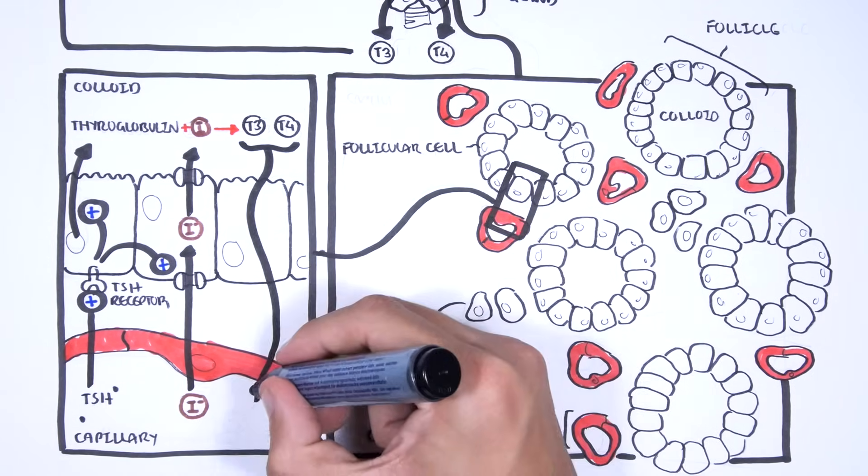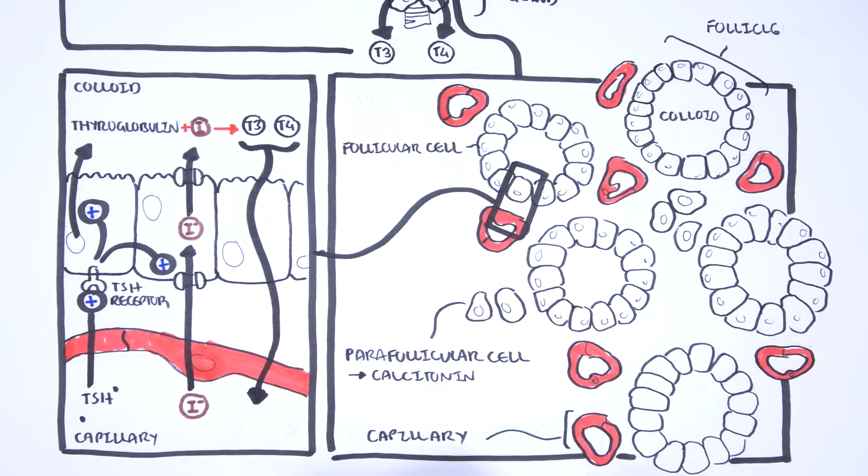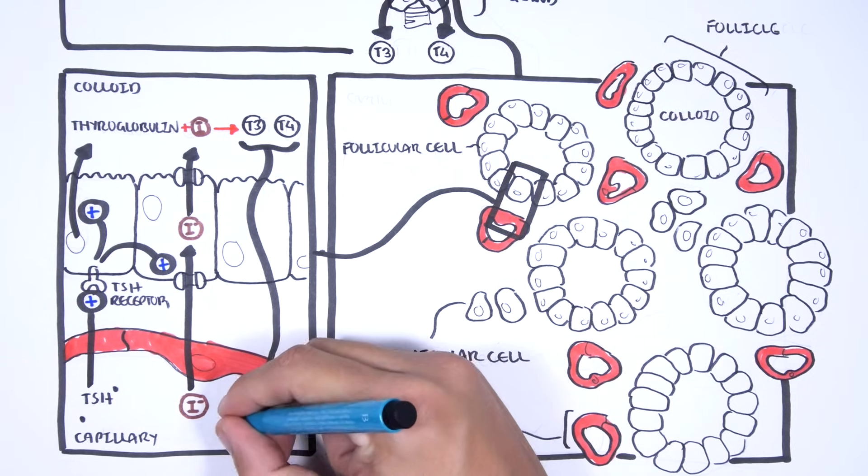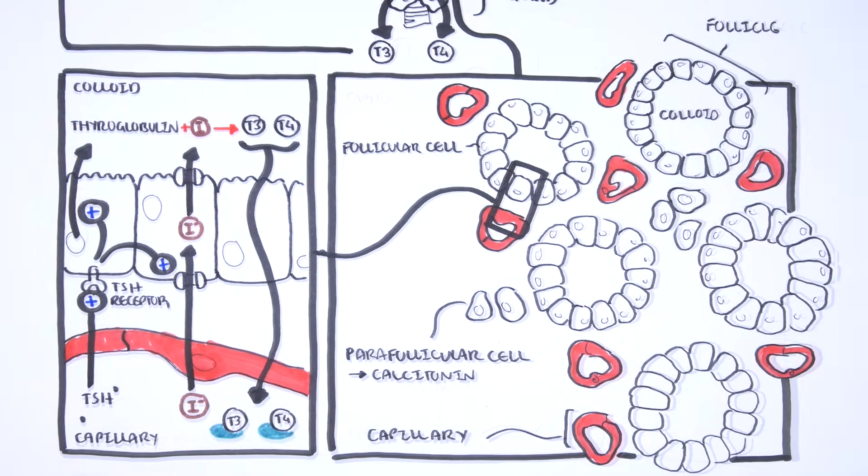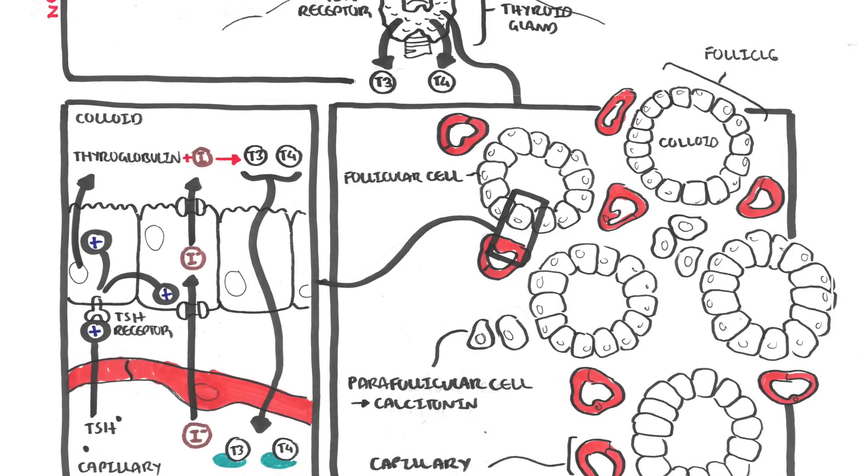T3 and T4 will enter circulation. The thyroid hormones travel in circulation bound to proteins, the main protein being thyroxine binding protein. And here, it will target the different cells around our body to elicit an effect, so increasing metabolism.